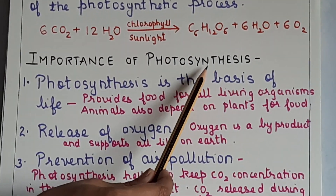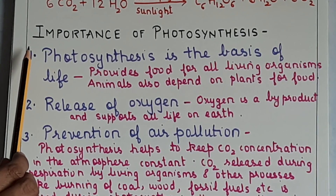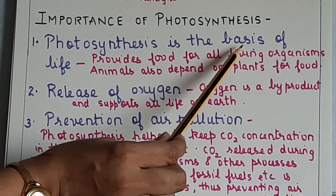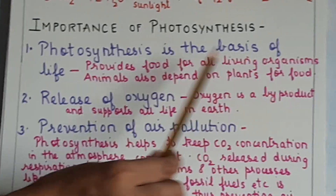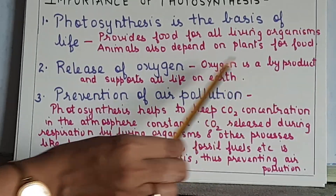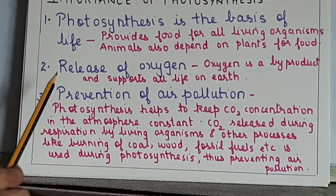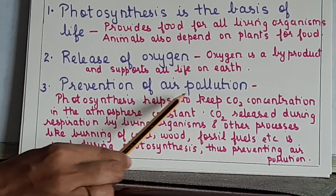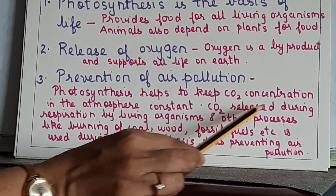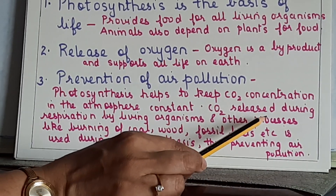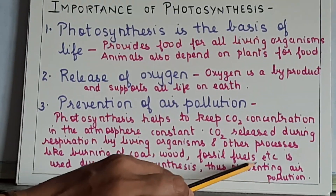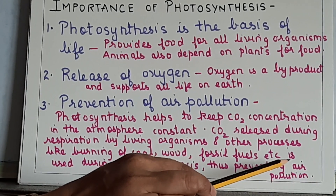The importance of photosynthesis is also very important — give it five stars. First, photosynthesis is the basis of life and provides food for all living organisms; animals also depend on plants for food. Second, oxygen is a byproduct and supports all life on earth. Third, prevention of air pollution: photosynthesis keeps CO2 concentration in the atmosphere constant. Carbon dioxide released during respiration and burning of coal, wood, fossil fuels etc. is used during photosynthesis, thus preventing air pollution.